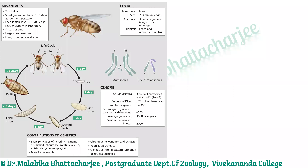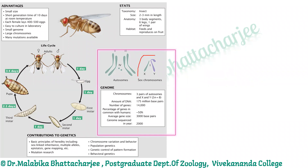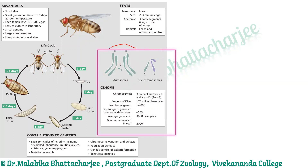Moving on to the genome of Drosophila — Drosophila has four chromosomes: chromosome 1, which is the sex chromosome; chromosome 2; chromosome 3; and the smallest, chromosome 4. Chromosomes 2, 3, and 4 are autosomes, and chromosome 1 is the sex chromosome. The Drosophila has an X and a Y chromosome as its sex chromosomes.